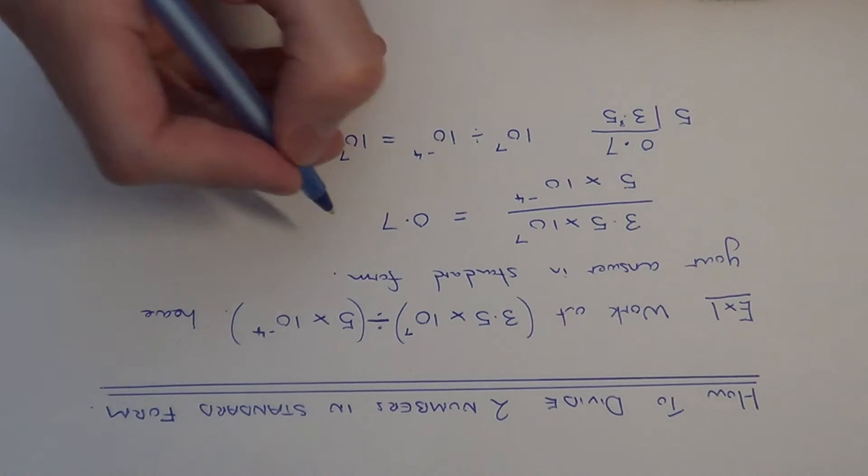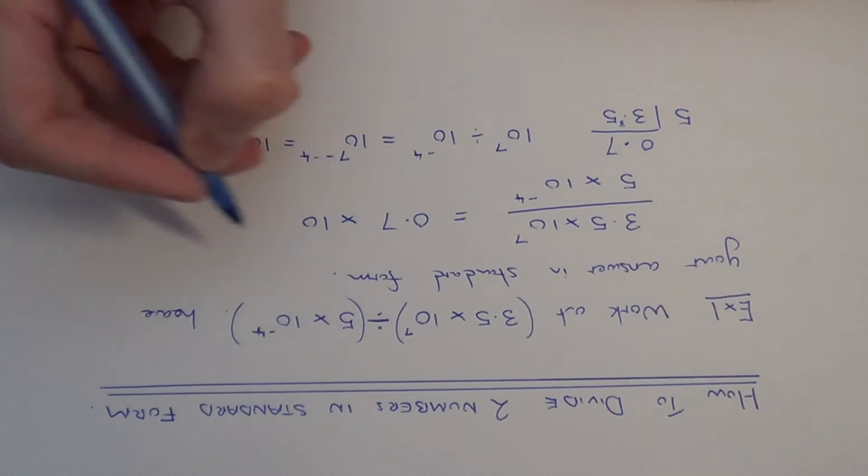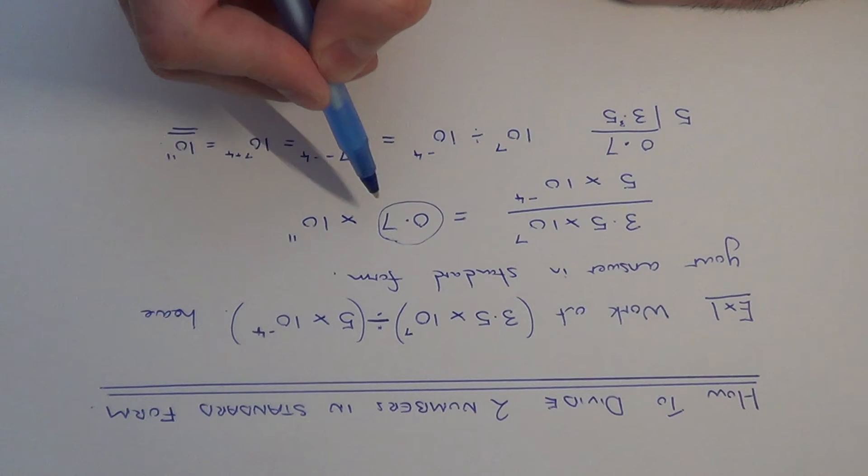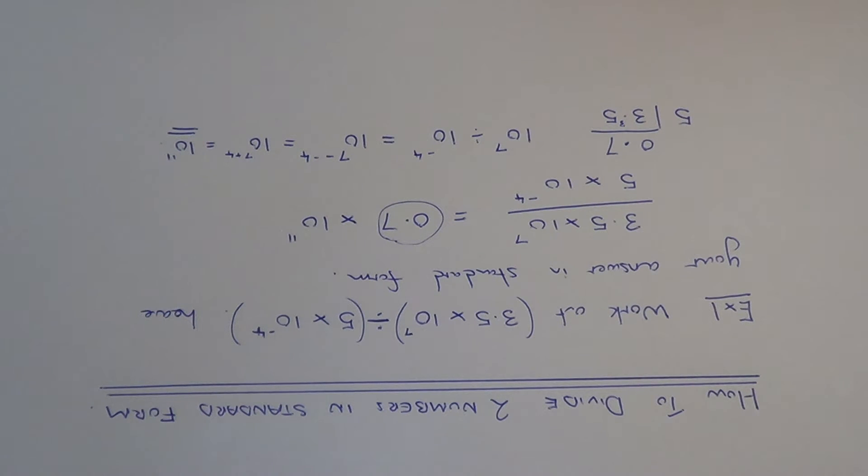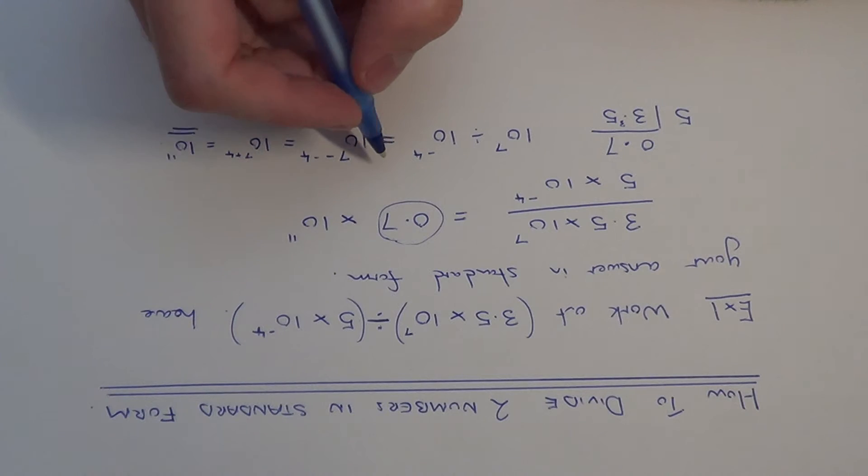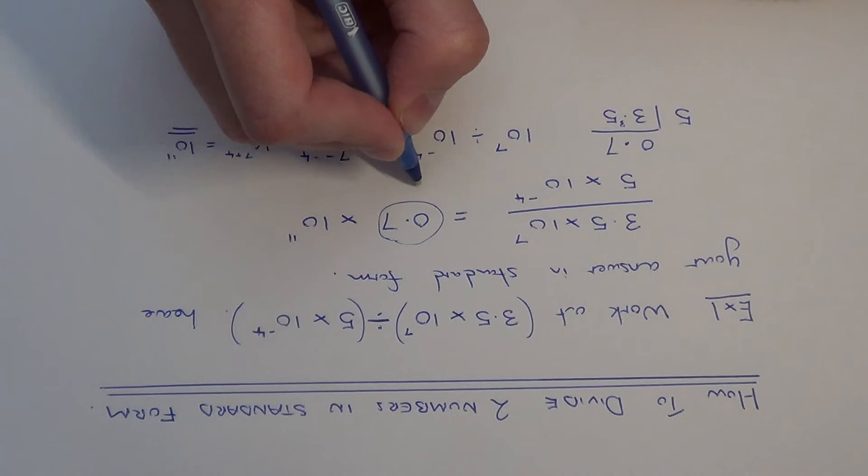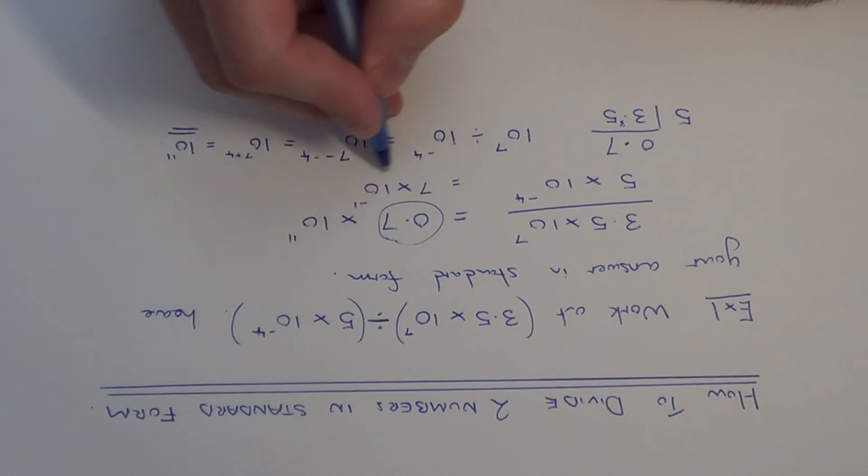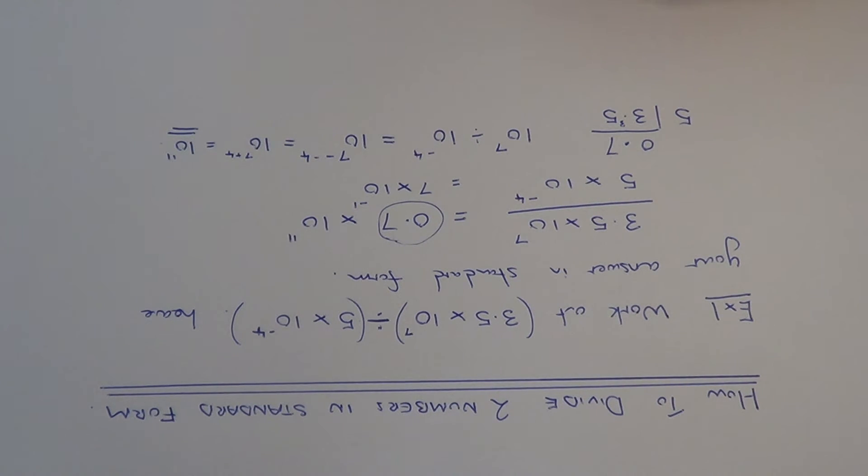So we've now got 0.7 times 10 to the power of 11. Now you might think that is the final answer. However, 0.7 needs to be a number between 1 and 10, because when we have a number in standard index form, that first digit always has to be between 1 and 10. So 0.7 can be written as 7 times 10 to the power of minus 1. If you didn't understand that, take a look at my video on converting small numbers into standard index form.